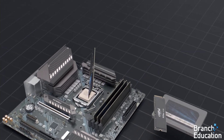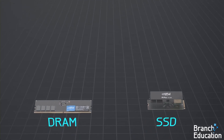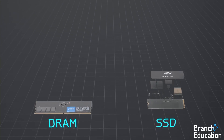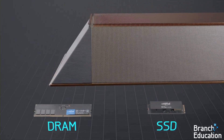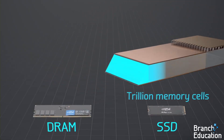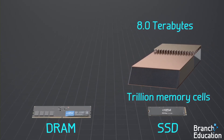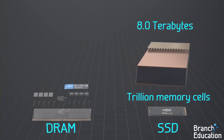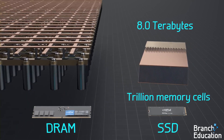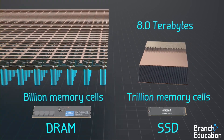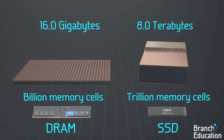The reason why your desktop uses both SSDs and DRAM is because solid-state drives permanently store data in massive 3D arrays composed of a trillion or so memory cells, yielding terabytes of storage, whereas DRAM temporarily stores data in 2D arrays composed of billions of tiny capacitor memory cells, yielding gigabytes of working memory.